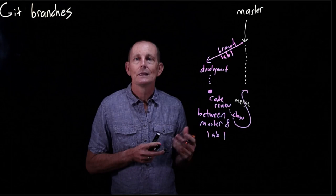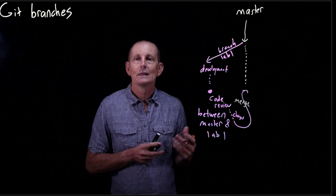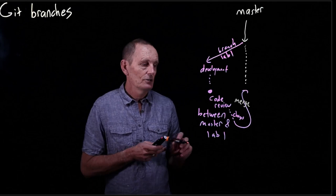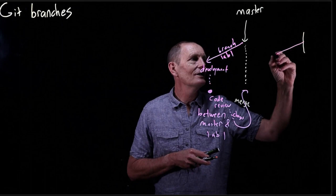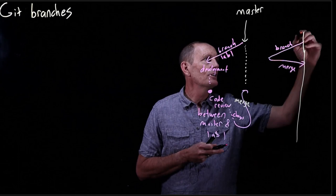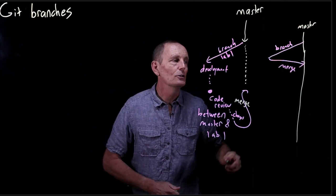So we merge from lab one into the master. And that happens normally only after the code review has been accepted. So whoever the reviewer is says, yes, please go ahead and put it in. Conceptually what happens is master looks like this. We come out on a branch and then we come back on a merge. And the master is just continuing on its way, getting updated by various new branches and merges.